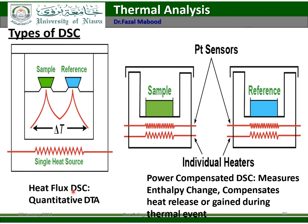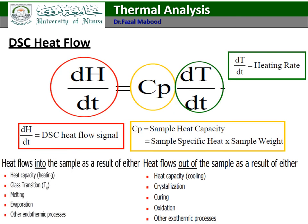There are two types of DSC: heat flux DSC and power compensated DSC. In heat flux DSC, the sample and reference are both under the same compartment. The DSC heat flow signal (dH/dt) equals the sample heat capacity (Cp) multiplied by the heating rate (dT/dt). Heat flows into the sample as a result of heat capacity, glass transition, melting, evaporation, and other endothermic processes. Heat flows out of the sample as a result of cooling, crystallization, curing, oxidation, and other exothermic processes.